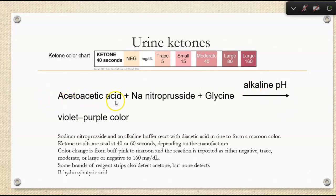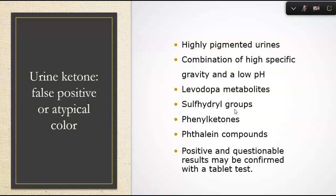Acetoacetic acid with sodium nitroprusside and glycine in an alkaline pH produces a violet-purple color. The lecture code for this lecture is 2431. False positives or atypical color can occur with highly pigmented urines, high specific gravity and low pH, levodopa metabolites, sulfhydryl groups, phenylketones, and phthalein compounds. Any positive and questionable results need to be confirmed by a tablet test.